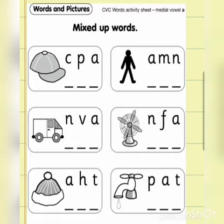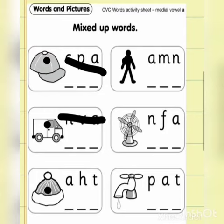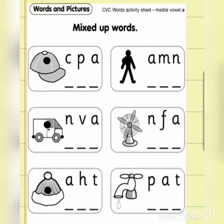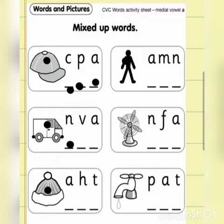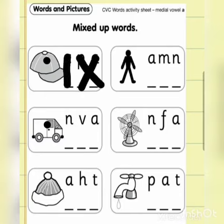They are not in a correct sequence. The words given are: cap, van, hat, man, fan, tap — but the spellings they have written are not in the correct order. They have given you the blanks down and asked you to write the correct alphabets to make a full word.